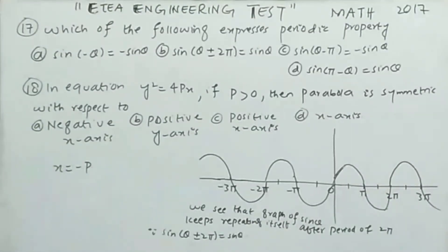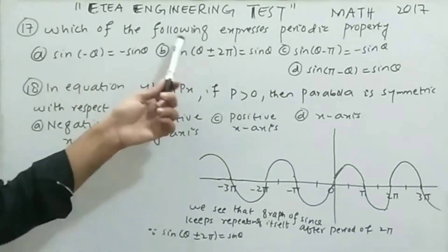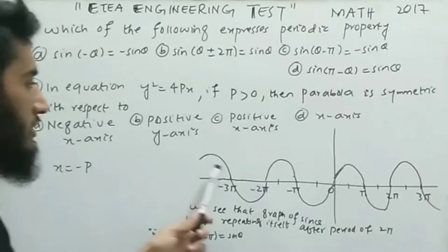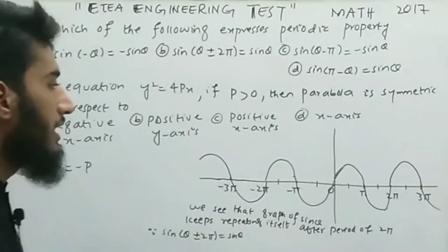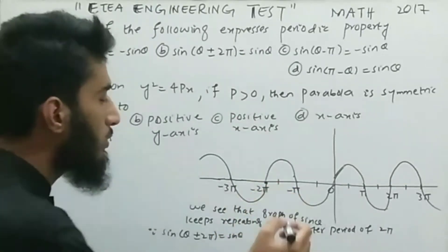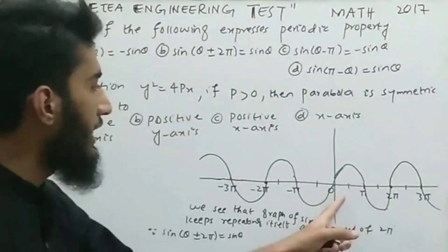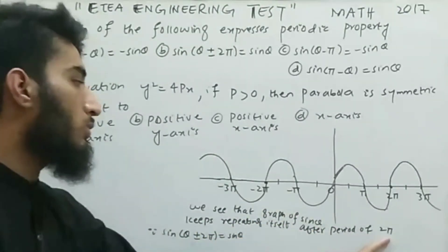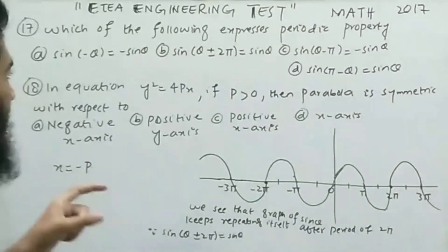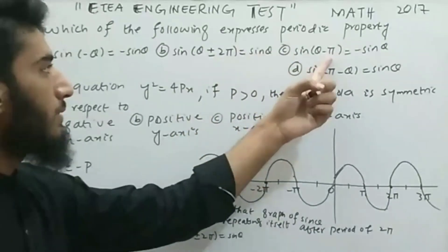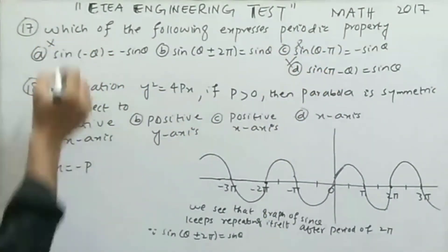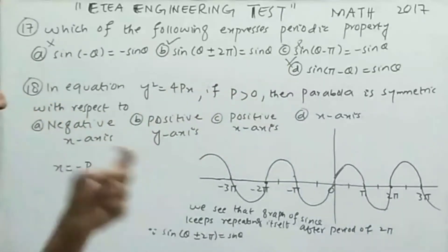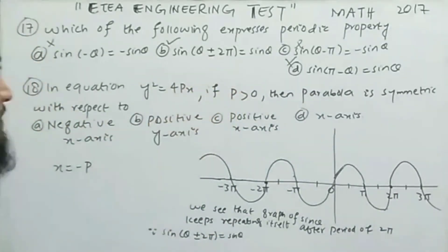MCQ number 17: which one of the following expresses the periodic property? The graph of sin θ repeats its value at every 2π — from 0 to 2π and from 0 to −2π. So the period of sin θ is 2π. Options with π alone are incorrect. The correct option is option B, which states sin(θ ± 2π) = sin θ, meaning sine repeats its value after an interval of 2π.